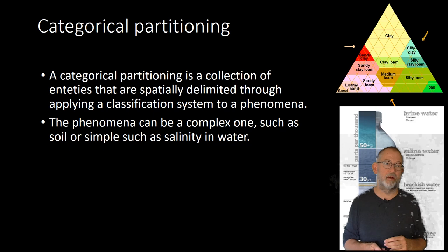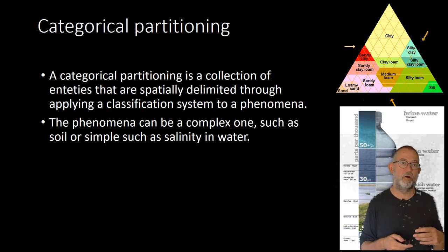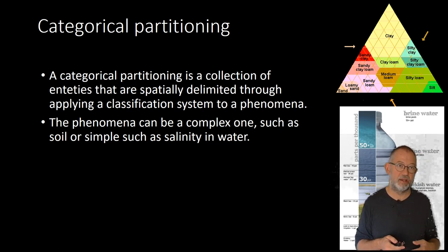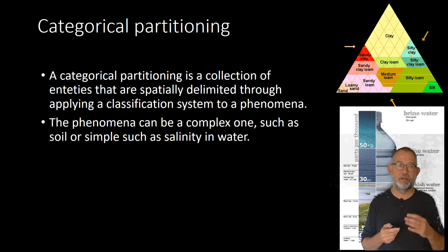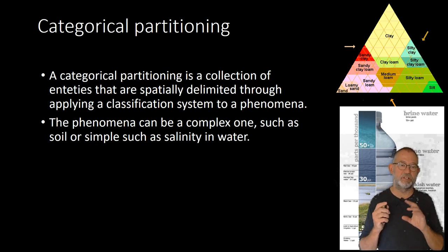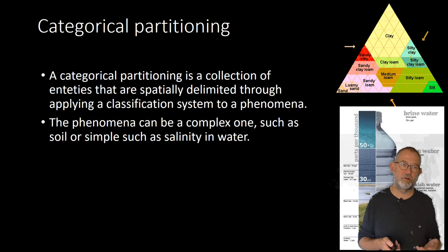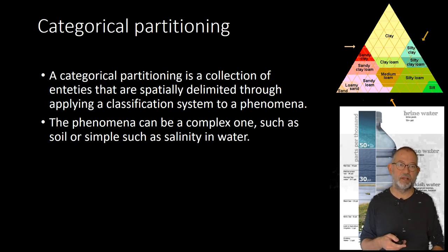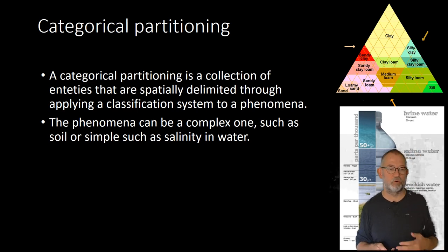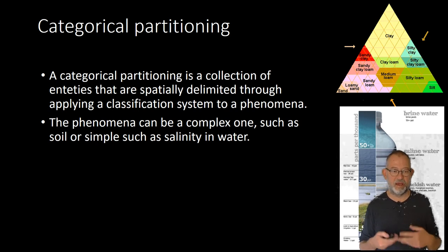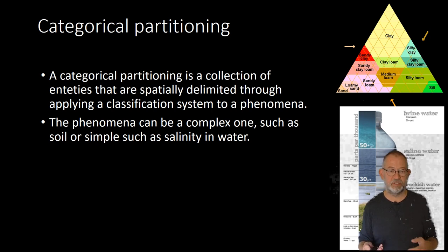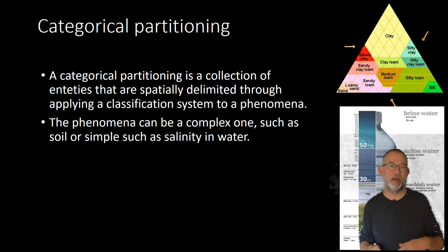Categorical partitions are basically based on one or more property fields that we classify using some classification system. At the top we see the international soil classification, which is based on clay and loam — how much of the different components and organic material are in the sample. Based on that classification, we can decide which soil type it is. Or it can be as simple as classifying water as fresh water, brackish water, or salt water based on the percentage of salt, or the parts per million of salt in the solution. Categorical partitions are based on measurements of properties which, through a classification system, become areas of sandy loam or an area of brackish water.